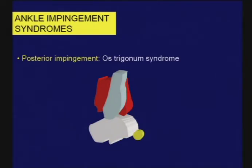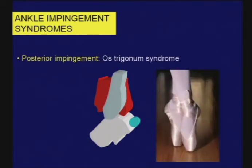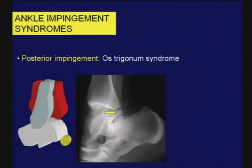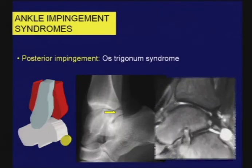A form of posterior impingement — we could consider it straight posterior impingement — is the os trigonum syndrome. This is particularly prevalent in ballet dancers because of the extreme plantar flexion required during some of the dance maneuvers. The size of the os trigonum may help you, but it is not a reliable finding because there are certainly cases of os trigonum syndrome with very small ossified centers. With conventional radiography, it has been suggested that lateral radiographs done with extreme plantar flexion may show a diminished space between the posterior tibia and talus, suggesting the os may be symptomatic.